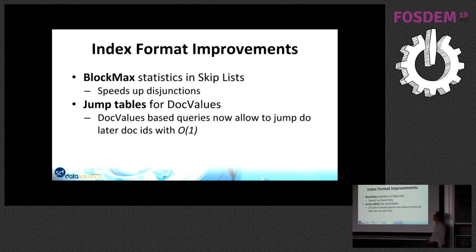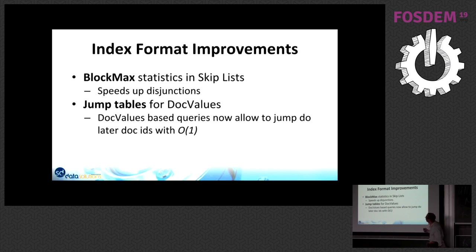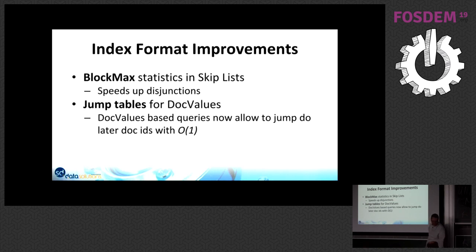There are also some index format improvements. First is the block-max statistics in the skip lists, which speeds up dense disjunctions. We also have a skip-list-like structure for doc values now, so function queries and doc-value-based queries can jump to later doc IDs in constant time. The index gets a little larger, but it should speed up queries relying on scoring factors in doc values immensely.